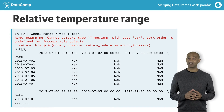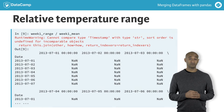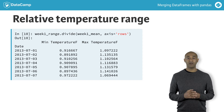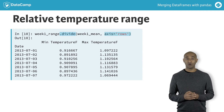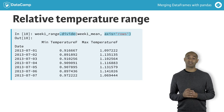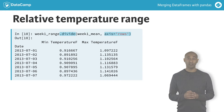Dividing the data frame week 1 range by the series week 1 mean doesn't quite work. The column labels don't match, so the result has all null values. Instead, we want to use the data frame divide method with the option axis equals rows. The divide method provides more fine-grain control than the slash operator for division itself. This broadcasts the series week 1 mean across each row to produce the desired ratios.